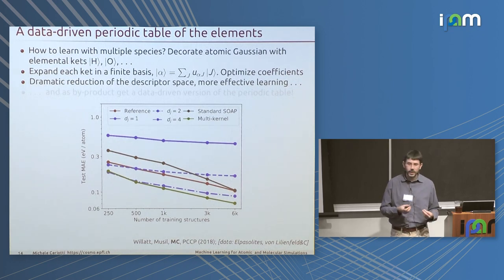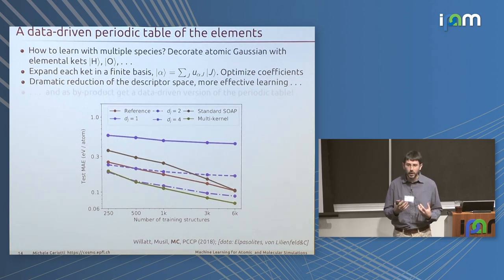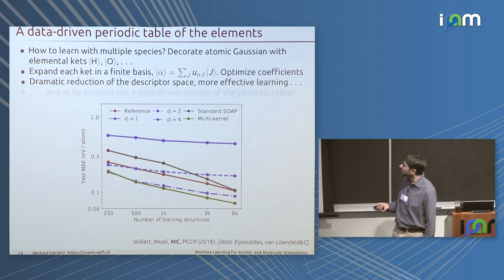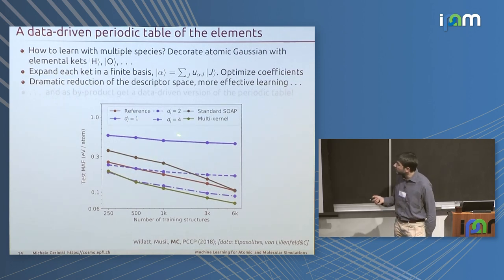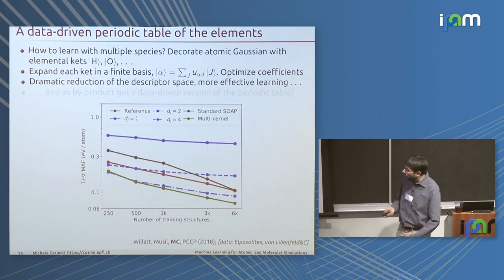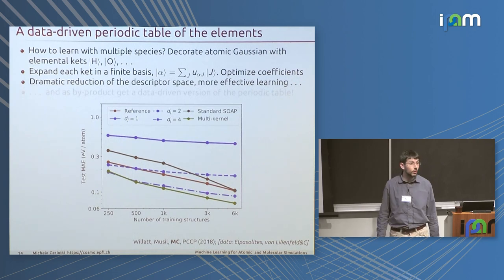We then ask: what happens if we reduce the dimensionality of chemical space to just 1D? It doesn't work well — you don't have enough descriptive power to represent differences between elements. But at dimensionality 2, the model already performs better than full-dimensional SOAP for small training set sizes. At dimensionality 4, it performs better than SOAP and better than the reference over the whole range of training set sizes.